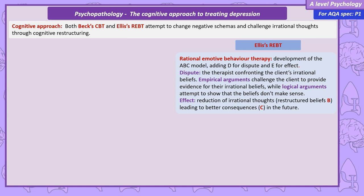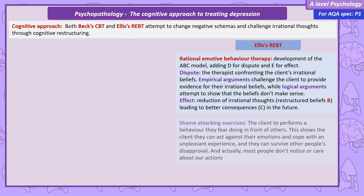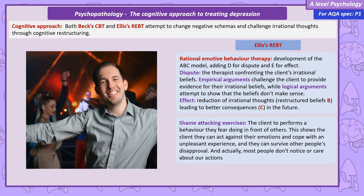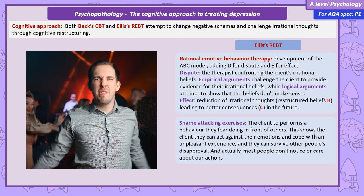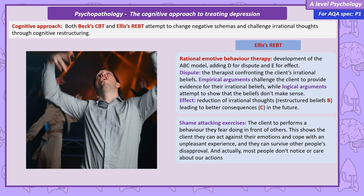The E of the model — the effect — is hopefully the reduction of irrational thoughts, leading to better consequences in the future. REBT also includes what's known as shame attacking exercises. This is getting the client to perform a behaviour they fear doing in front of others. So perhaps someone who thinks they're a bad dancer and hates the idea of dancing in public will be asked to join a dance class. Performing these exercises shows the client they can act against their emotions and cope with an unpleasant experience — that they can survive other people's disapproval, and actually most people don't notice or care about our actions, and ultimately we worry too much about other people's approval.